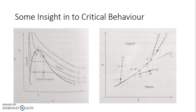Moving further, we can think about obtaining the values of critical points. On the left side of the figure is a PV diagram for a given fluid with certain points marked — J, Q, K, N. On the right side is the corresponding PT diagram showing the vapor-liquid region and the critical point.